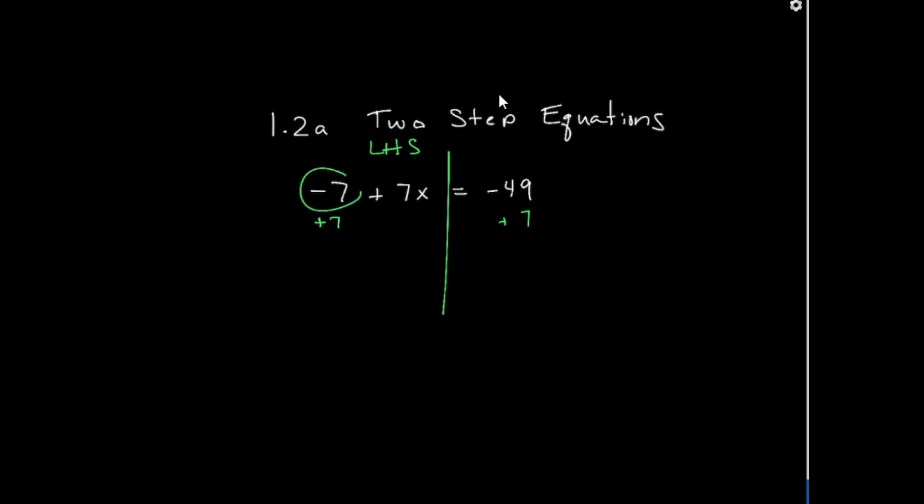And again, you can think about this as taking this number, that negative 7, and it moves over to the other side as a positive. So now I go through and this becomes zero. I bring down my 7x, and now I have that 7x is equal to, on this side of the equation,